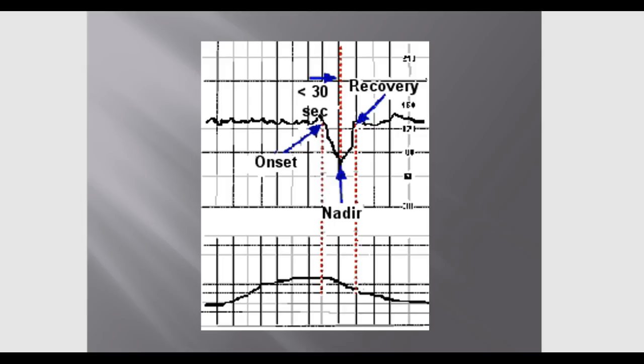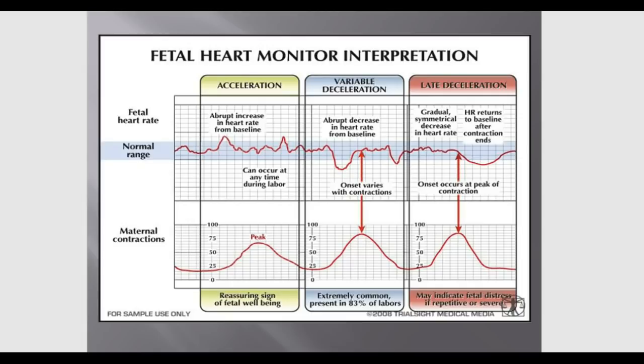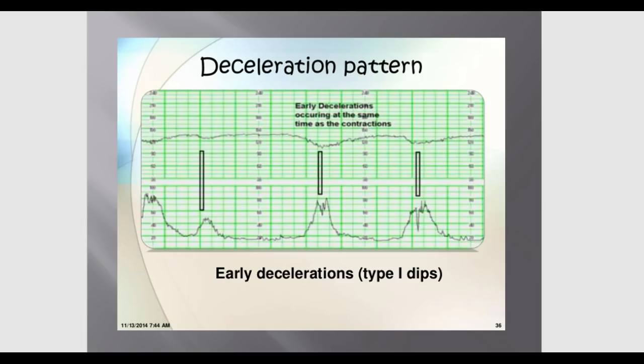Deceleration is the drop from baseline, and the lowest point of that decrease is called the nadir. You look at the onset of the contraction, the nadir (lowest point), and when the baby's heart rate returns to baseline (recovery), and compare that to the uterine contraction. There are different types of fetal responses — accelerations, decelerations, late decelerations, and variable decelerations — and differences in patterns you can observe.